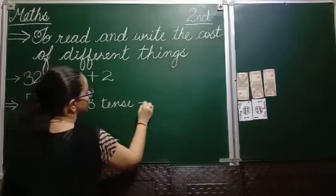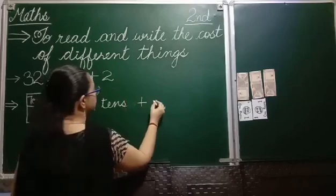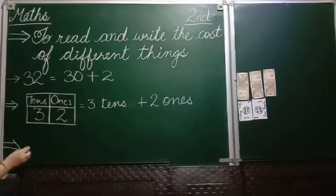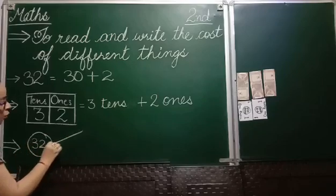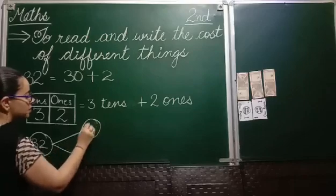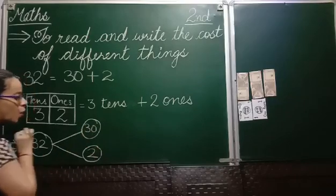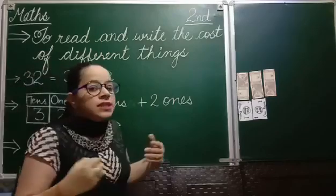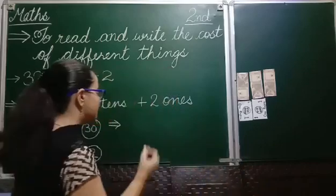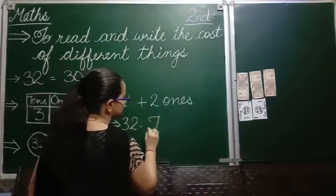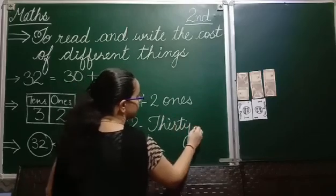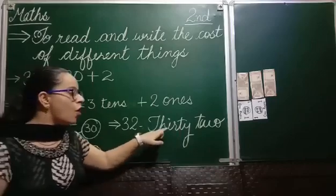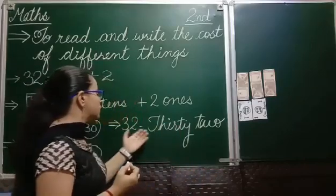It means we can write it as 3 tens plus 2 ones. The other way is that 32 has 2 numbers in itself — the first number is 30 and the other number is 2, so 30 and 2 means 32. And the last way is what we say this number: 32, so we write thirty-two. This form is called writing in words.